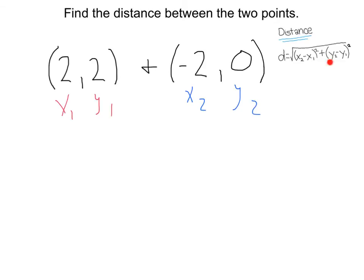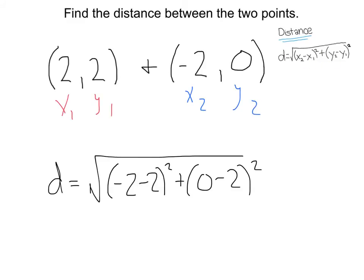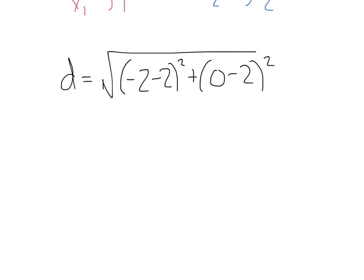Then let's plug it all into our distance formula. Plugging that in, we'll get x2 minus x1, negative 2 minus 2 squared, plus y2 minus y1, 0 minus 2 squared.